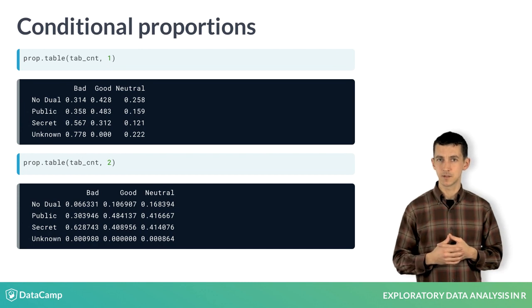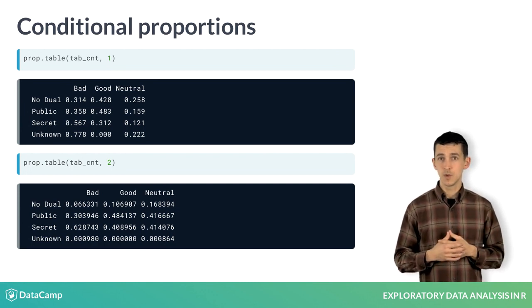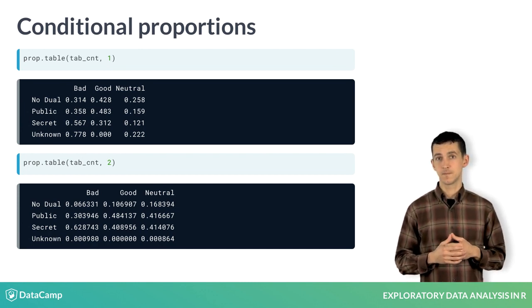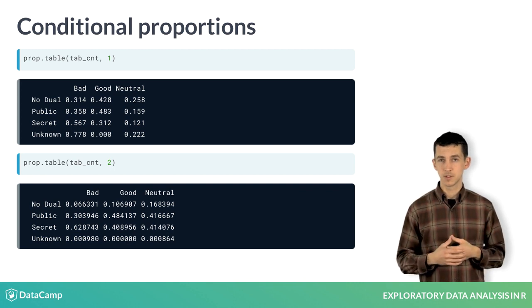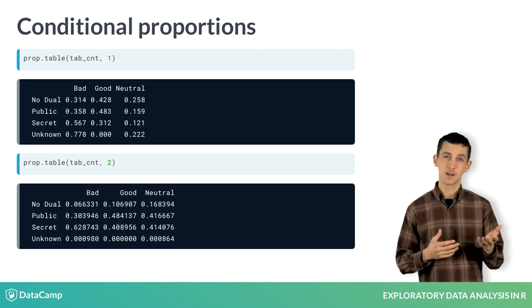If we're curious about the systematic associations between variables, we should look to conditional proportions. An example of a conditional proportion is the proportion of public identity characters that are good.